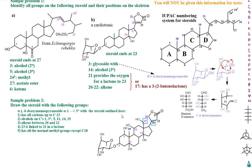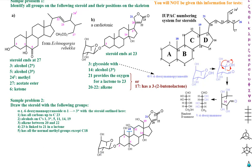We need a double bond between 20 and 22, and 23 is linked to 21 in a lactone. So these are the atoms in the lactone: 1, 2, 3, 4 — it'll be a 5-membered lactone because O is one of the atoms. We've done the lactone between 21 and 23, just like the one above, and there's a double bond between 20 and 22. It ends at 23 — all carbons up to 23. Normal methyl groups except C18 — we're told it's not there, so that's different.